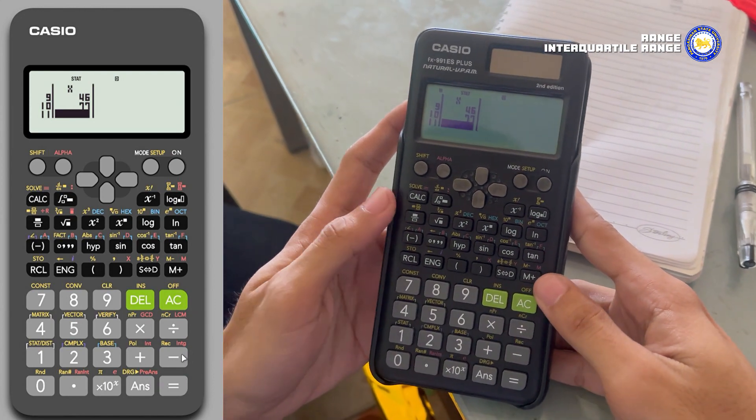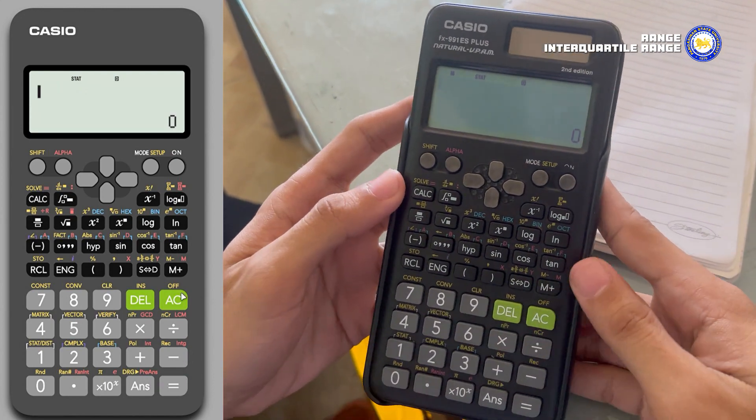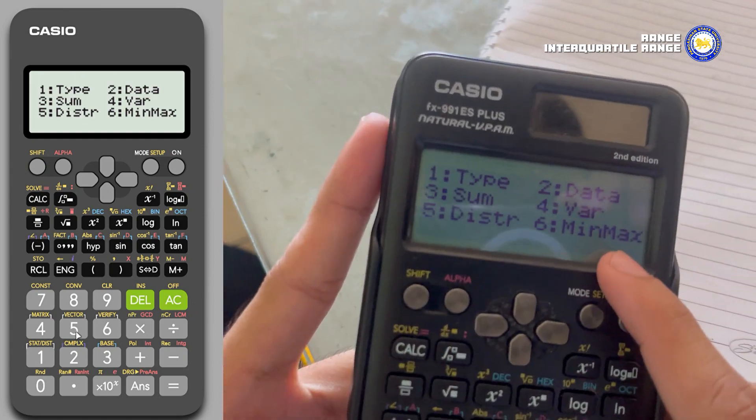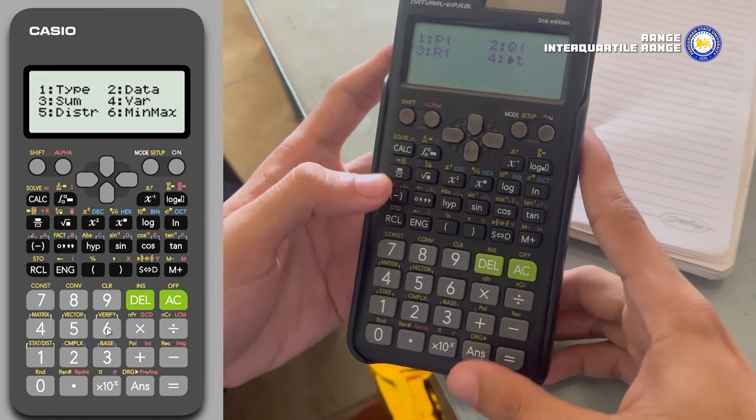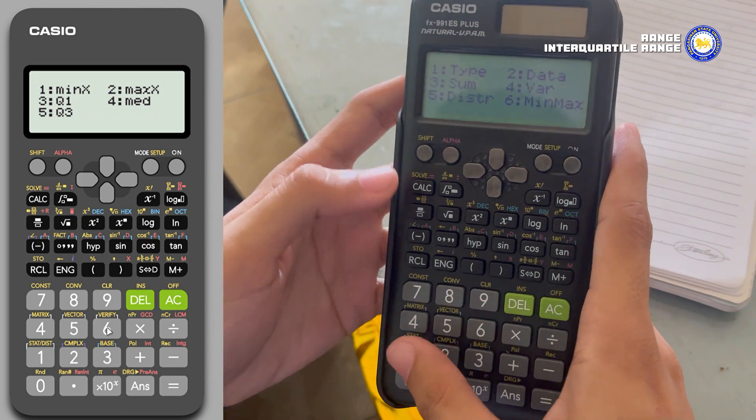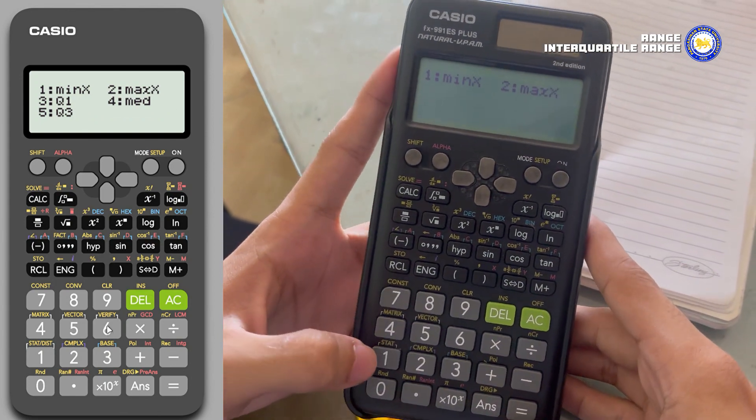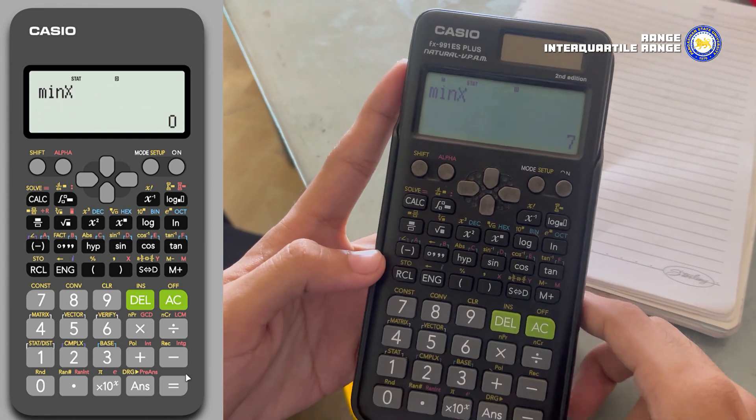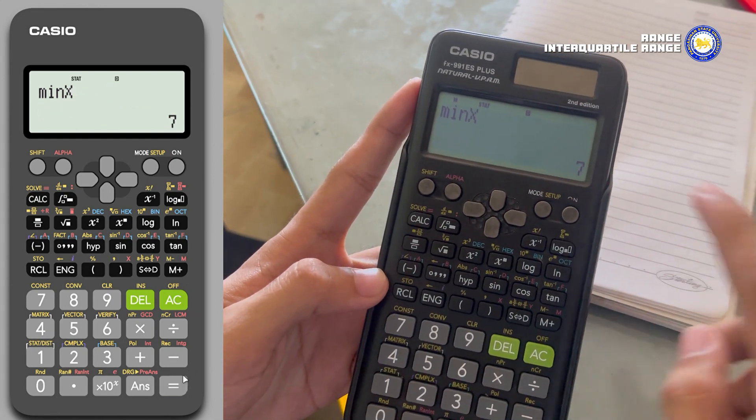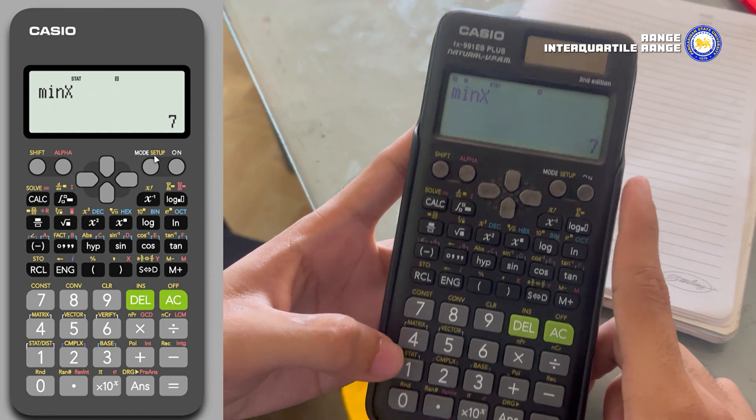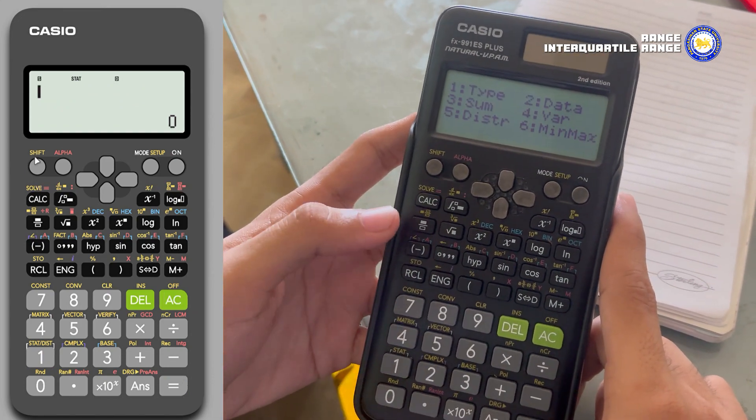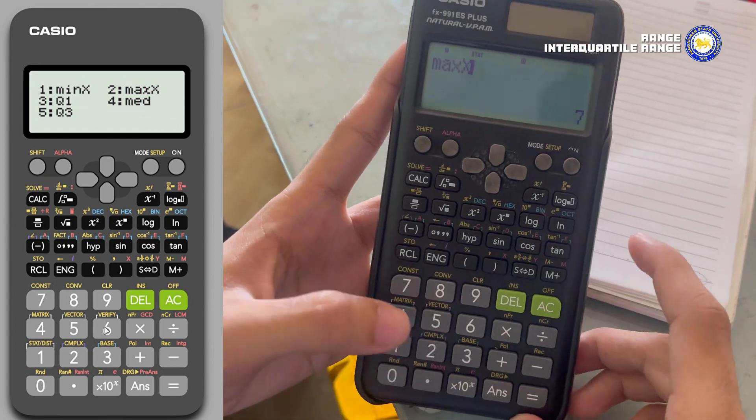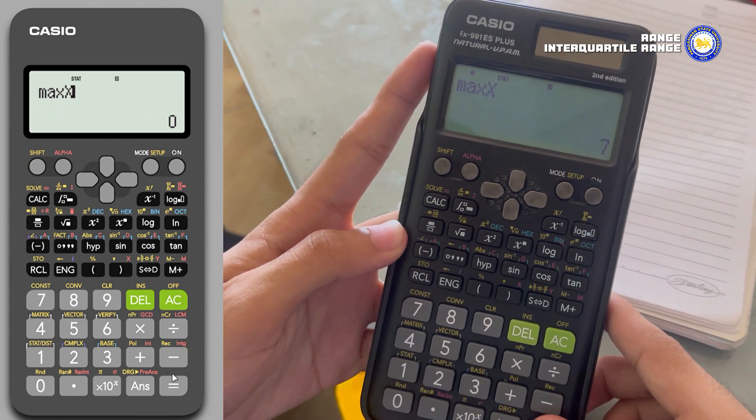After you input all the numerical values, press AC, then Shift, 1. Click 6 for getting minimum and maximum. For minimum value, press 1 then press equal. The minimum value is 7. Next, to get the maximum, press Shift 1, then press 6, number 2 for maximum, then press equal. The value of maximum is 88.